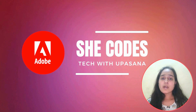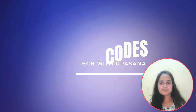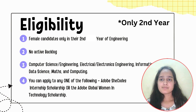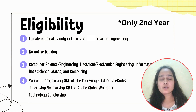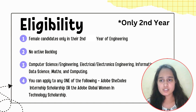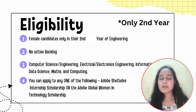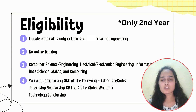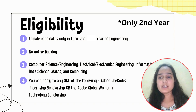Coming to the eligibility part: no active backlog is allowed. Only female candidates in the 2nd or 3rd year of engineering can apply. Your branch can be CS, ECE, Information Technology — basically tech branches. You can apply to any one of the two scholarships provided by Adobe: first is the Adobe SheCode Internship Scholarship, and second is the WIT scholarship — Adobe Global Women in Technology Scholarship. You cannot apply to both.